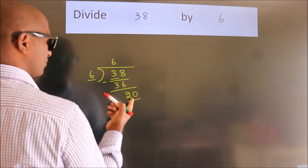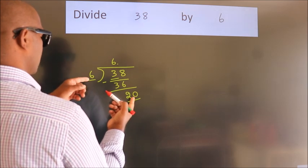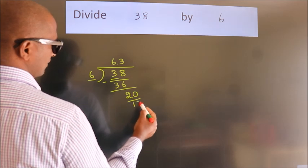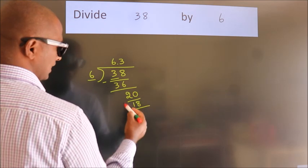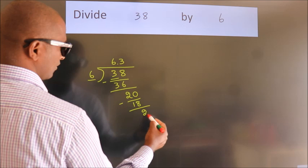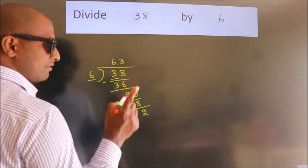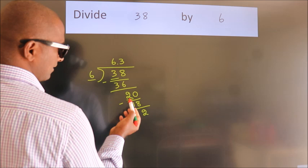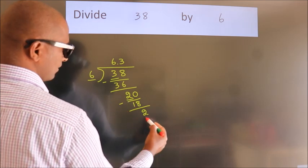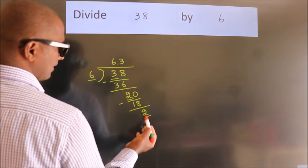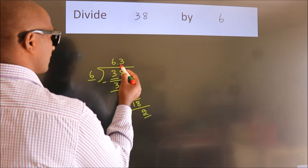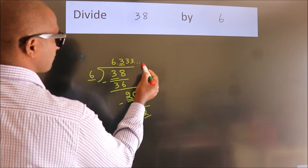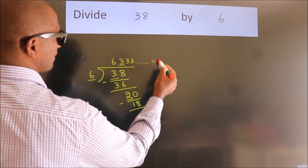A number close to 20 in 6 table is 6, 3 is 18. Now we subtract. We get 2. Now you observe, we had 2 here. And we got 2 again. That means this number keep on repeating. So this is our quotient.